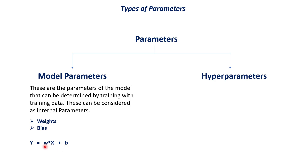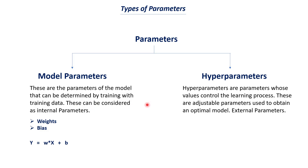So w and b are your model parameters. We initiate with random weight and bias values, and once the model is fit with the data, it will try to find which are the best parameter values for w and b. These parameters are called model parameters, and there is another set of parameters called hyper-parameters.